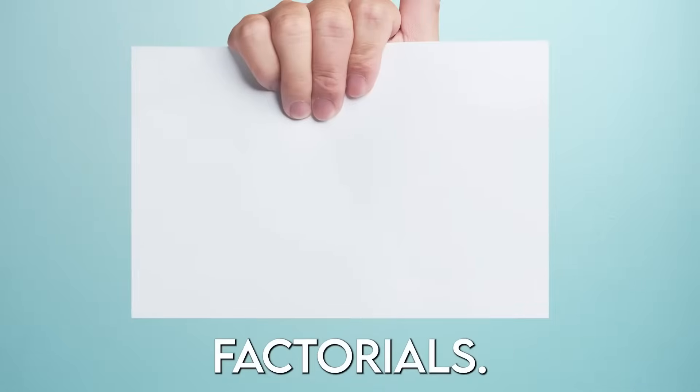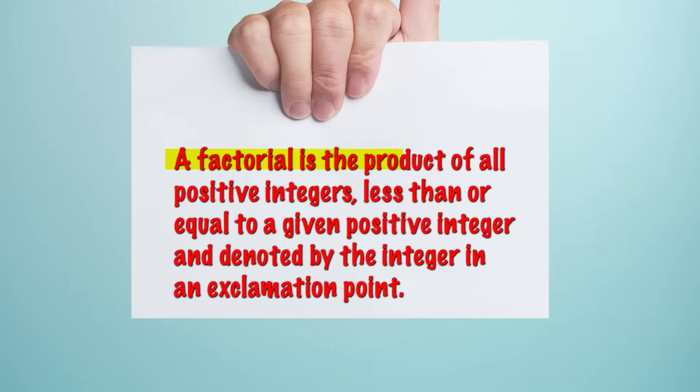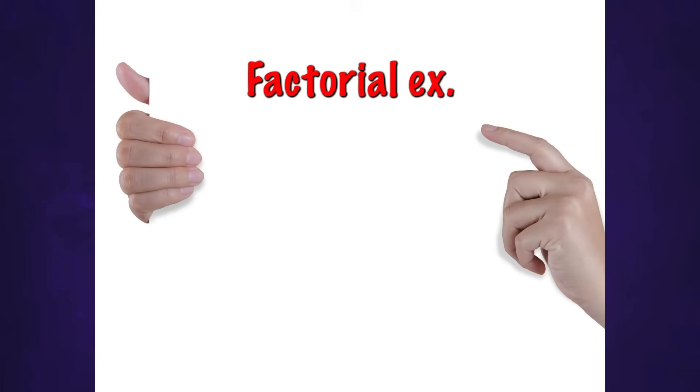First we're going to look at factorials. A factorial is the product of all positive integers less than or equal to a given positive integer and denoted by the integer and an exclamation point. Basically what a factorial means is you're going to take the number before the exclamation point and you're just going to times it by everything below it.